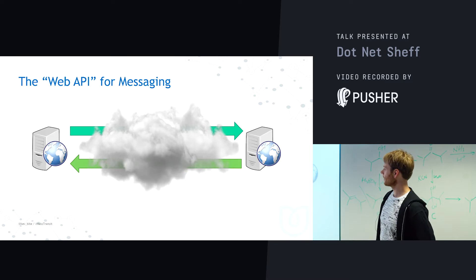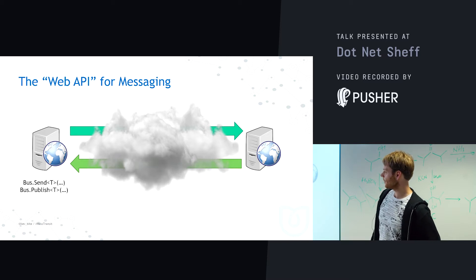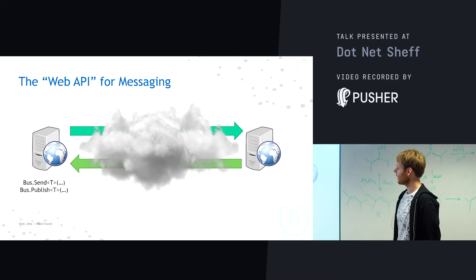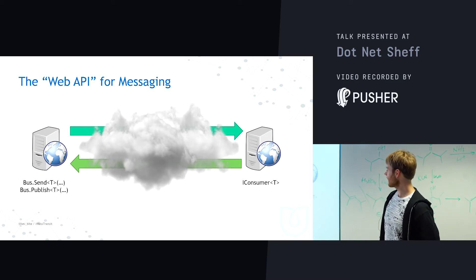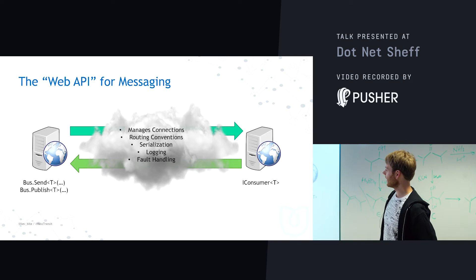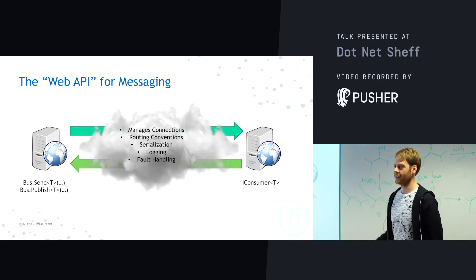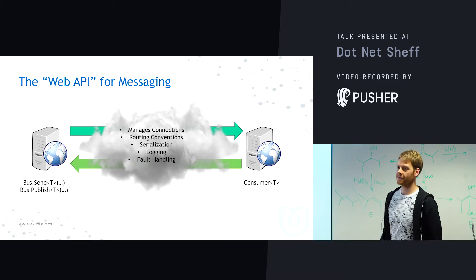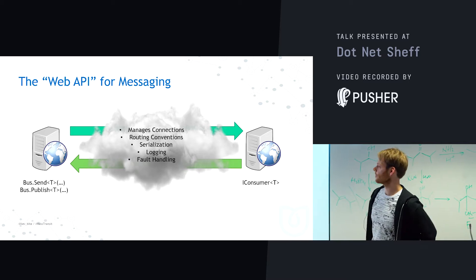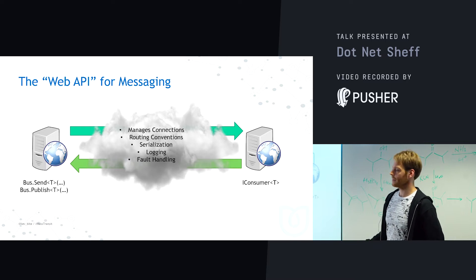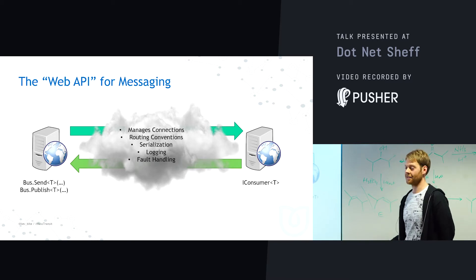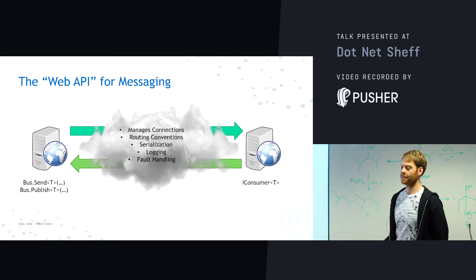From a MassTransit perspective, we have our server and client. Our client does a bus.Send of T and a bus.Publish of T, so we don't really care about how it's communicating at the wire. Our server just has an IConsumer of T. You don't need to care about the underlying detail — there's magic in between that manages connections to message brokers, deals with routing conventions, serialization, logging, and error handling. If any error messages get processed, they just get pushed onto error queues for you.